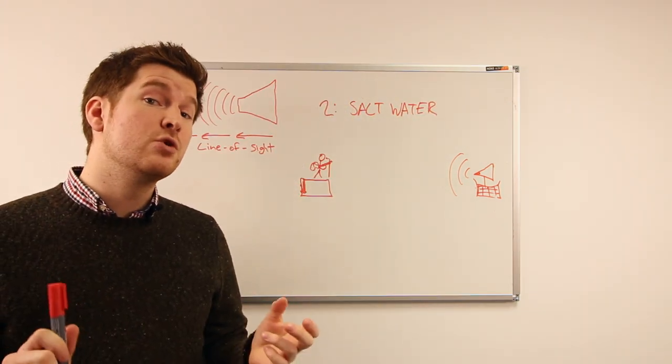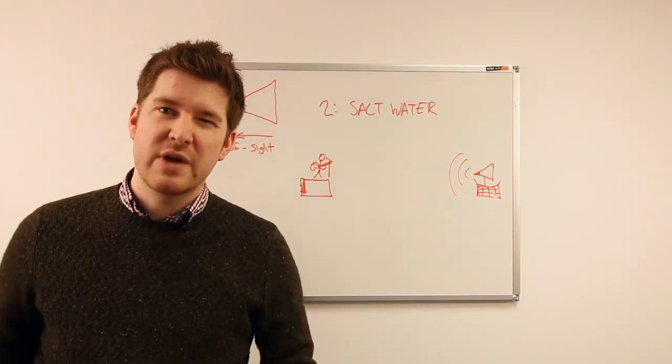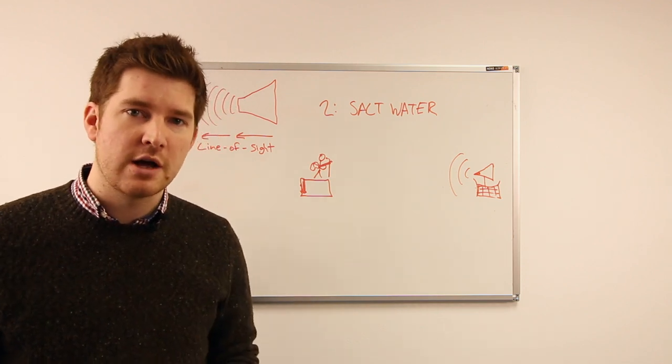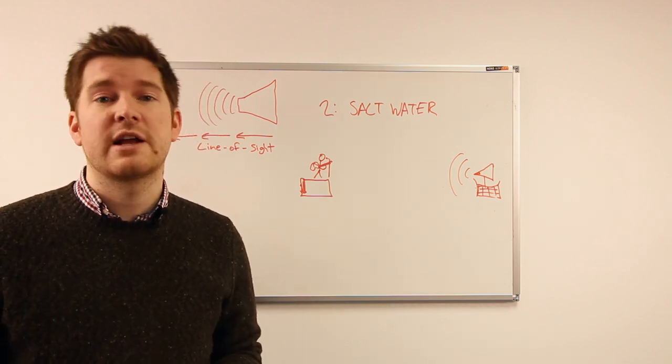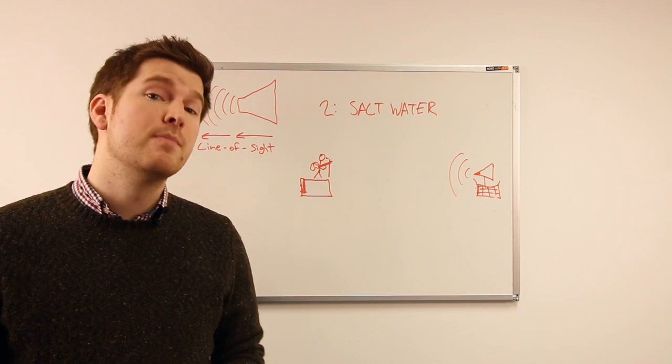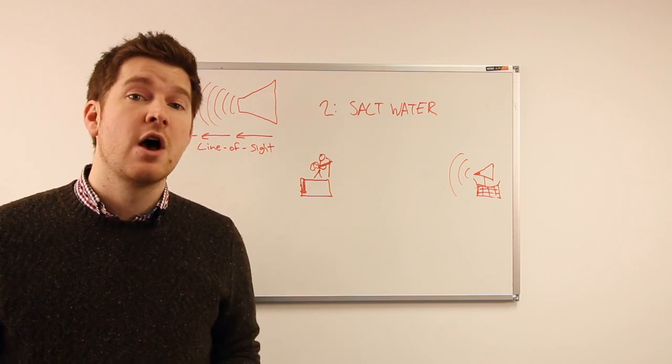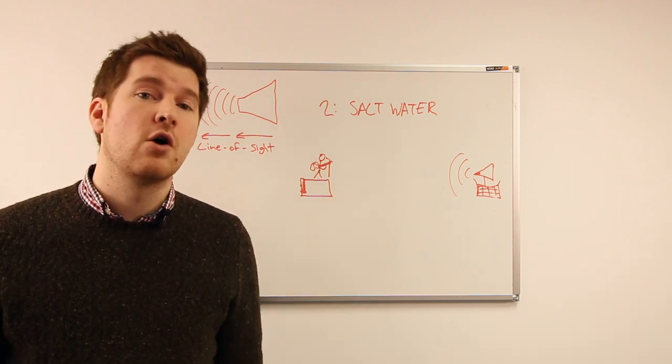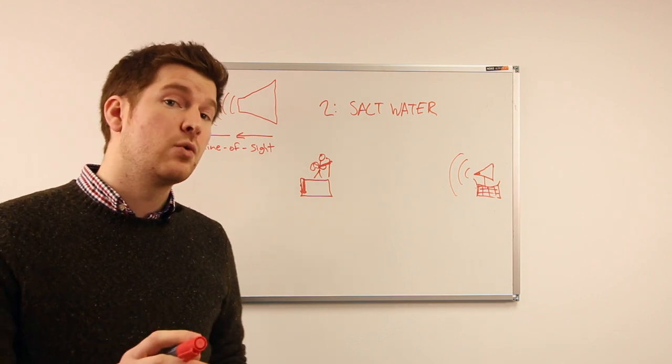Major RF enemy number two is saltwater. If we cast our minds back to our science lessons back at school, you'll likely remember being told that the human body is essentially made up of a whole vast quantity of water and specifically saltwater.